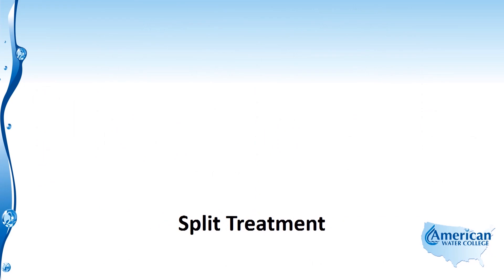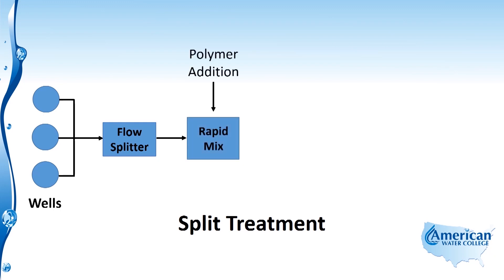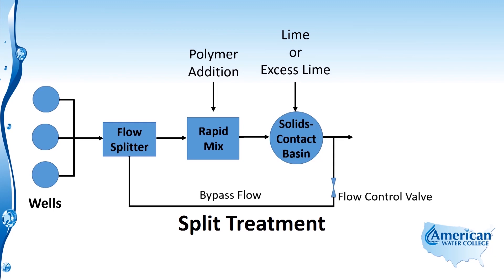The last method is called split treatment, a variation of the softening process intended to reduce chemical usage by splitting the flow stream. Hard groundwater from wells flows into a flow splitter, where it goes one of two places: into the rapid mix where polymer or coagulant is added, then into a solids contact basin where lime or excess lime is added; or bypassed through a flow control valve, skipping the rapid mix and solids contact basin entirely. This allows only a portion of the water to be treated, while the bypassed flow maintains its hardness and alkalinity.